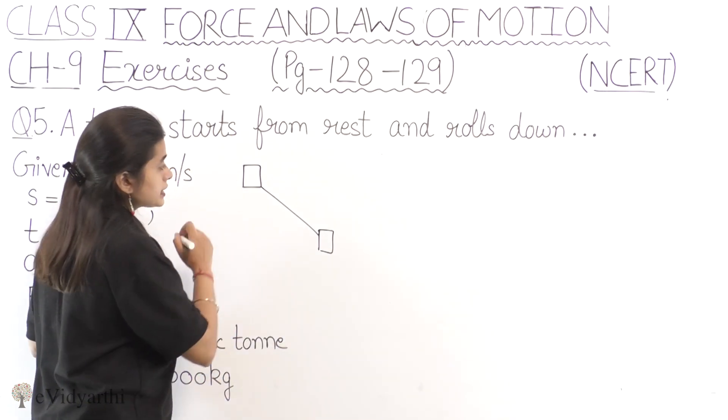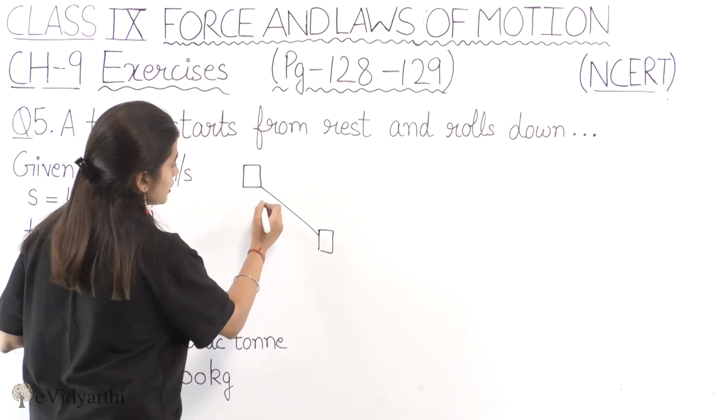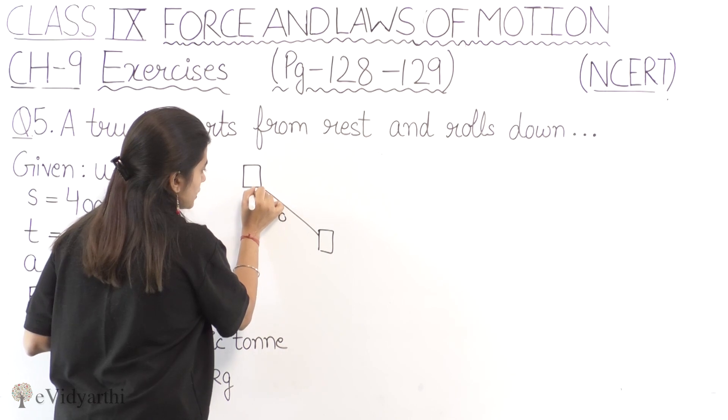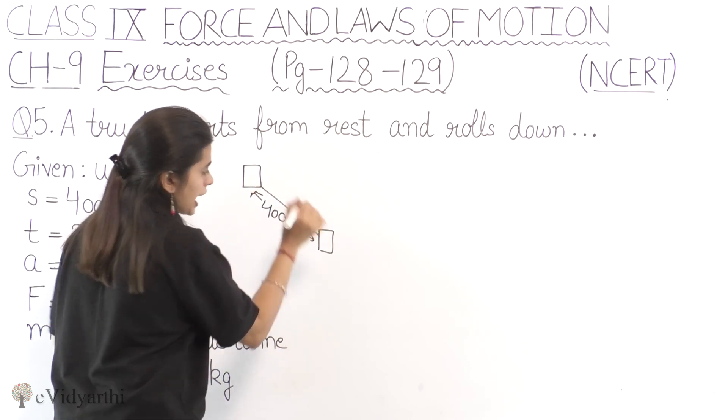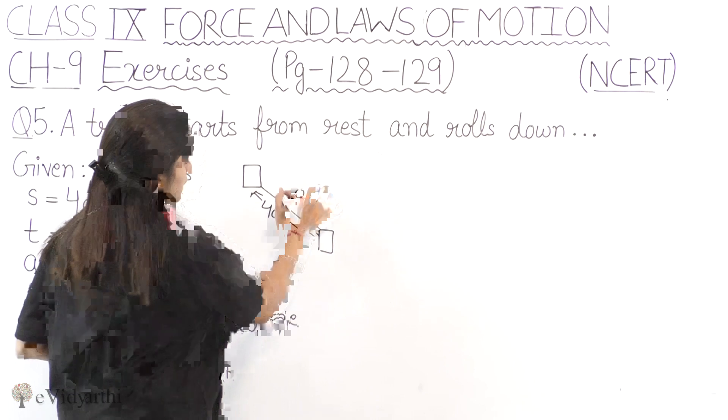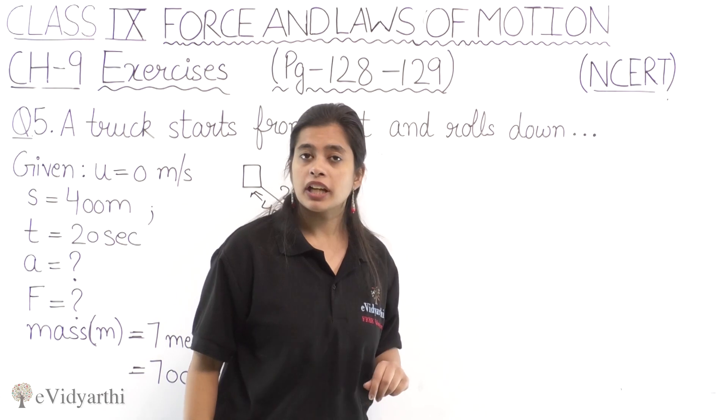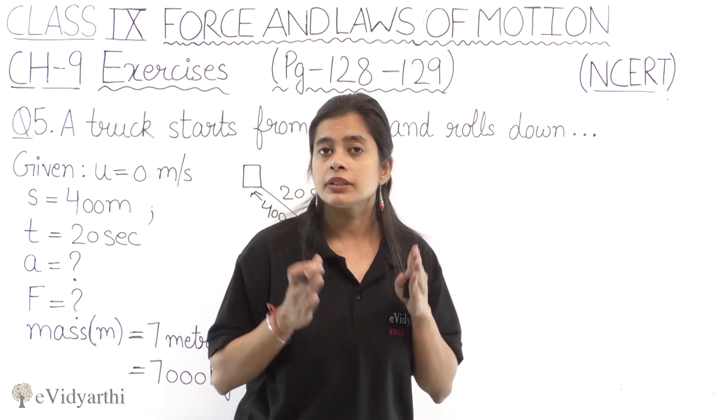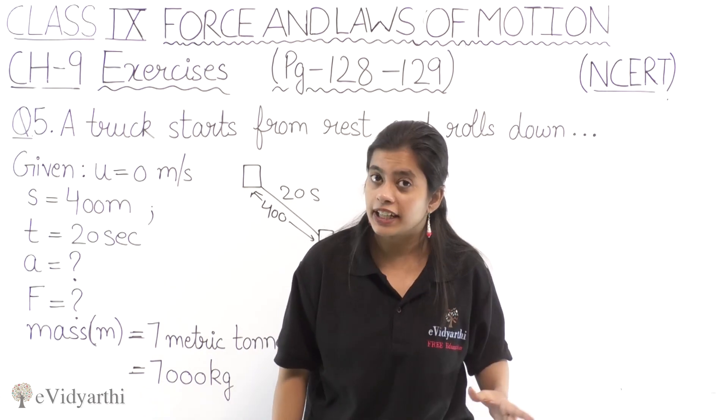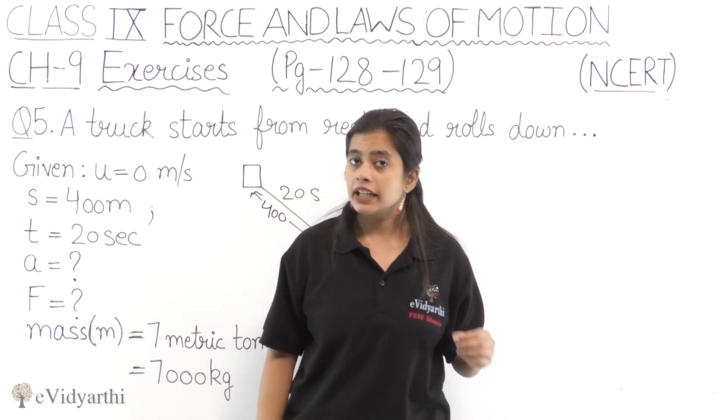So now the next thing which is given in the question is the distance and the time. The distance we have given is 400 meters. So we have to find the constant acceleration.